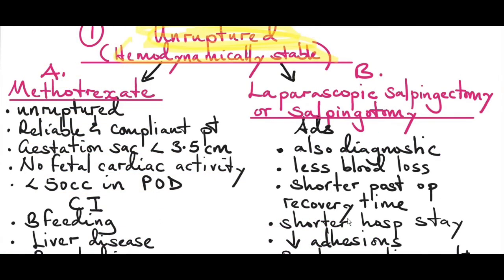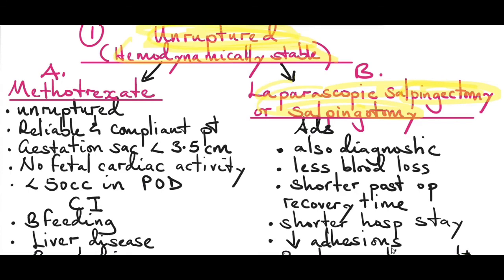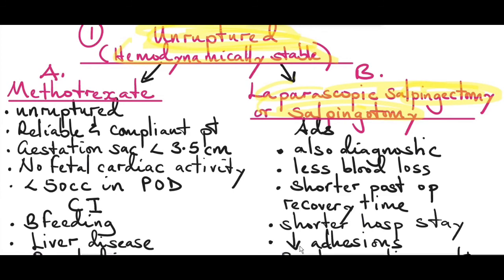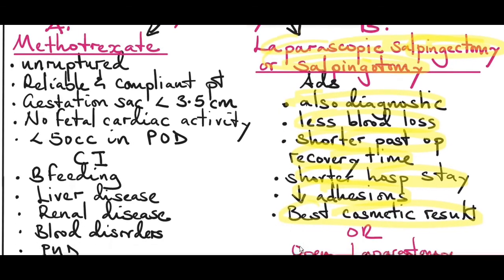Surgical management of unruptured ectopic pregnancy includes laparoscopic salpingectomy or laparoscopic salpingotomy. In salpingectomy, you resect the whole fallopian tube. In salpingotomy, you make a small incision at the site of the ectopic and remove the tissue. The advantage of salpingotomy is that it preserves the tube, but it increases the risk of another ectopic pregnancy at the same site due to scarring and fibrosis. Advantages of laparoscopy over open surgery include use as a diagnostic tool, less blood loss, shorter post-operative recovery time, shorter hospital stay, less adhesion formation, and better cosmetic results.